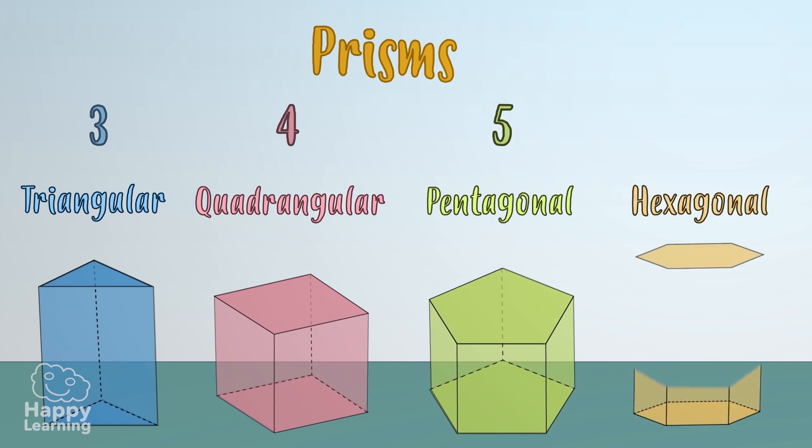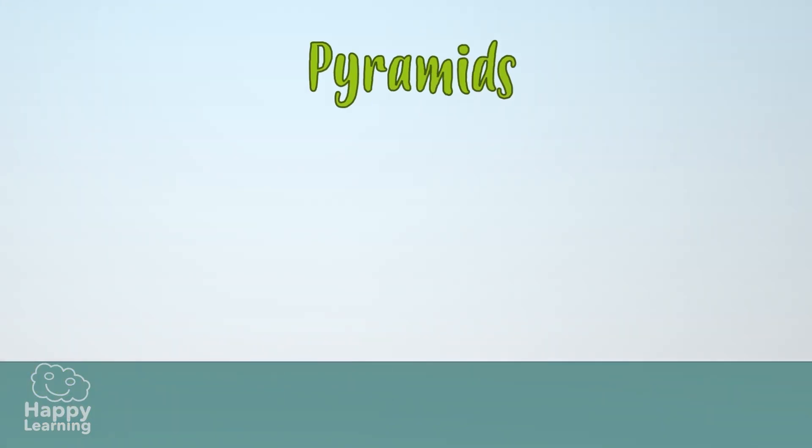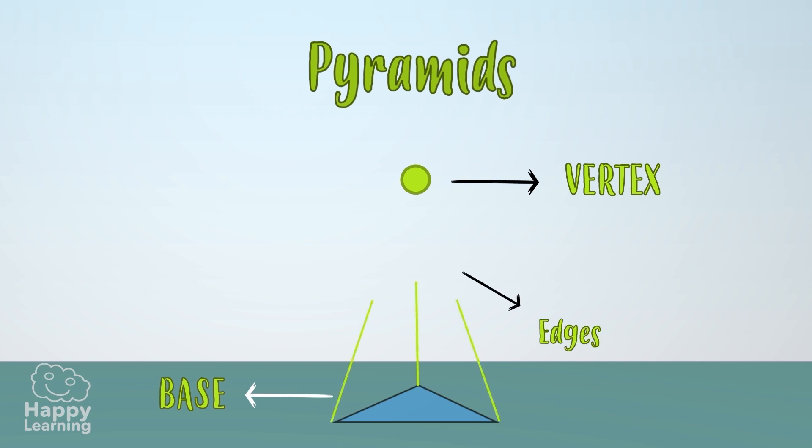The pyramids have a single base and a common vertex where the edges of the lateral faces meet. So it is clear that the lateral faces will always be triangular.